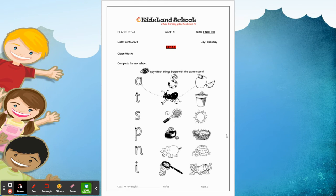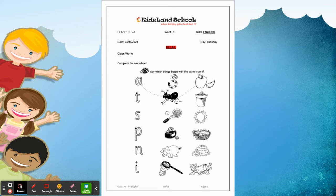Good morning children. In today's English class, we are going to do a recap of the letters we have learnt: S, A, T, I, P, N. We are going to match the letter with the pictures. One is already done for you — A for Ant and A for Apple.